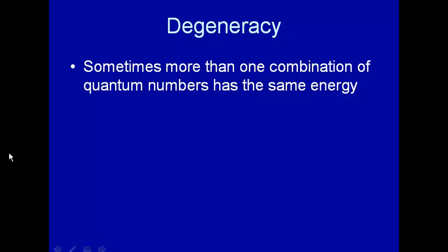Different wave functions and energy levels for a particular system are described by quantum numbers. In general, you would expect that if you have a different set of quantum numbers, you might have a different energy corresponding to a different wave function. But sometimes what happens is that you have more than one combination of quantum numbers that gives the same energy. The term for this is degeneracy, and you would say the states are degenerate.